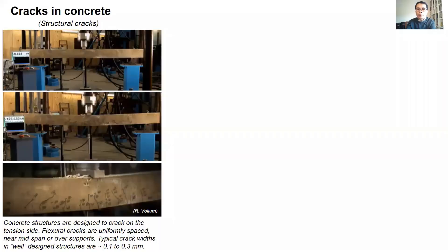As I'm sure you know, concrete is weak in tension and therefore has a tendency to crack when subjected to tensile stresses. Cracks come in various shapes and sizes, occupying a range of length scales, but can be broadly classified as either structural or non-structural cracks. Structural cracks, as the name implies, occur due to external loading — for example, flexural cracks that form on a beam subjected to bending.